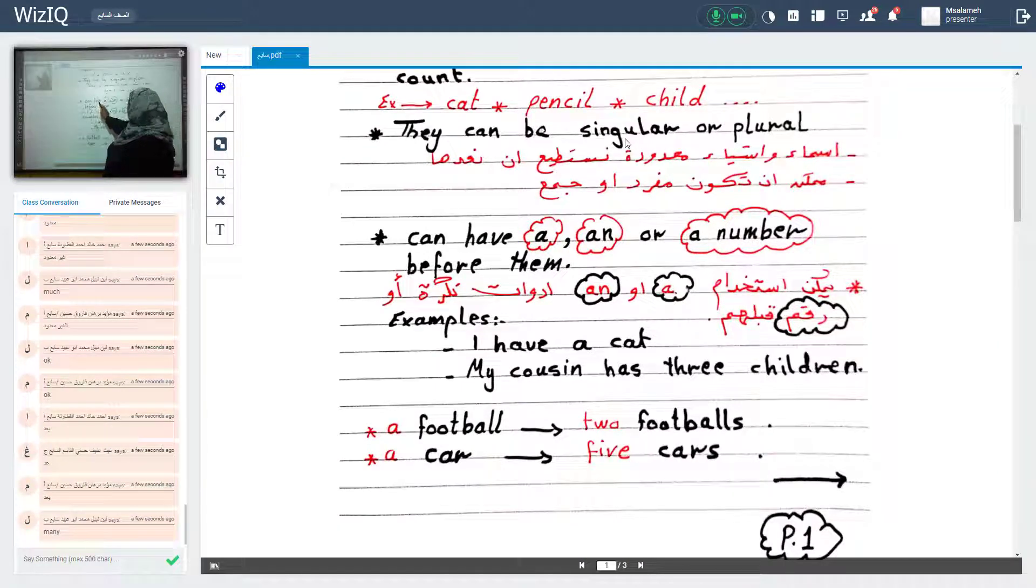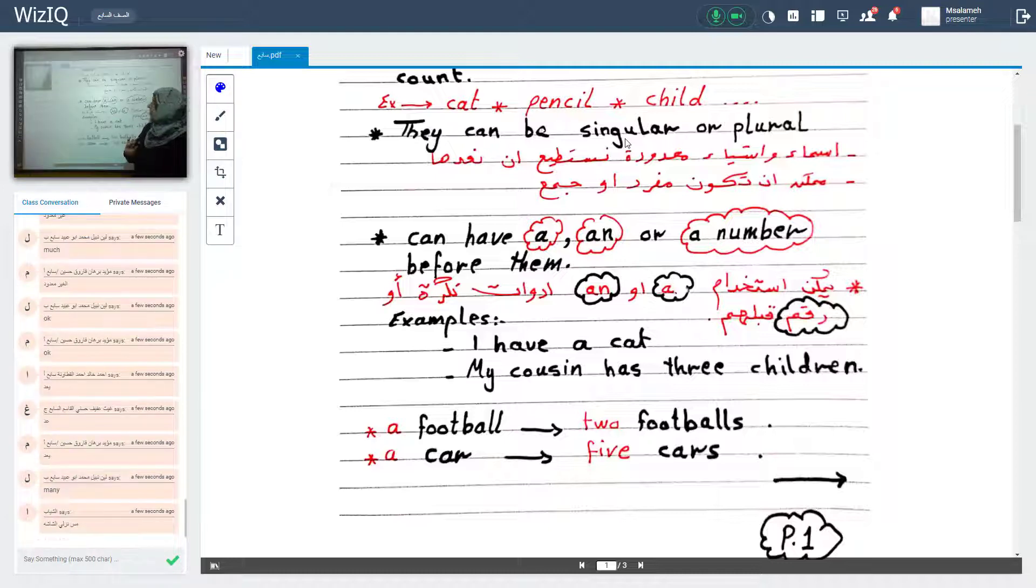Can have a or an, articles. هاي أدوات عنا. Or a number before them. بستطيع أستخدم الـ a مثلاً a cat. An apple. Three children مثلاً. Or a number. يمكن استخدام a or an أدوات أو رقم قبلهم. Look at these examples. Are you with me?